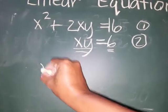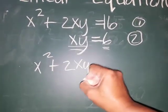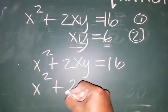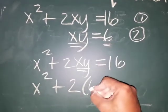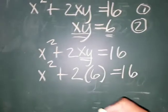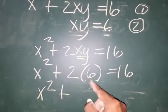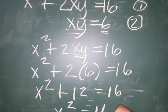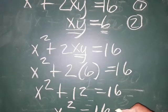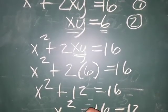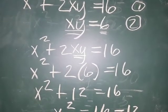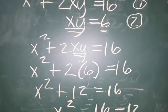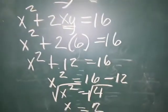Copy equation 1: x squared plus 2xy is equal to 16. Substitute xy: copy x squared plus 2, and our xy is 6, is equal to 16. So x squared plus 2 times 6 equals 16 — that's x squared plus 12 equals 16. Transpose positive 12 over the equal sign — it becomes negative 12. So x squared is equal to 4. Put a radical sign on both sides, so x is equal to 2.